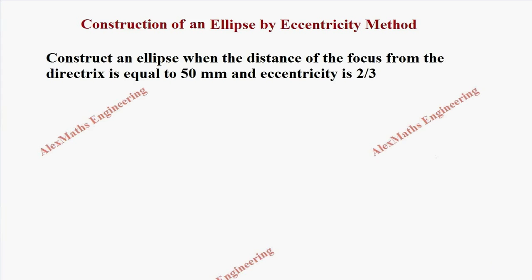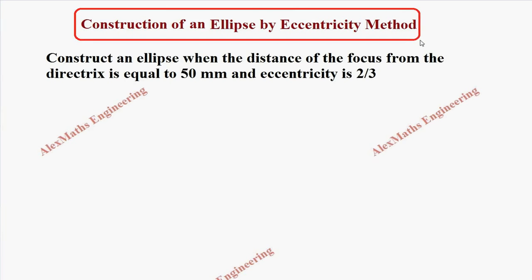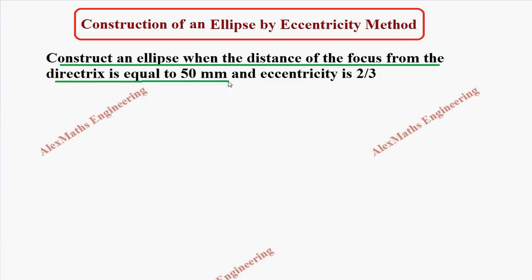Hi students, this is Alex. In this video we are going to discuss the construction of an ellipse by eccentricity method. The given question is: construct an ellipse when the distance of the focus from the directrix is equal to 50 millimeters and the eccentricity is 2 by 3.